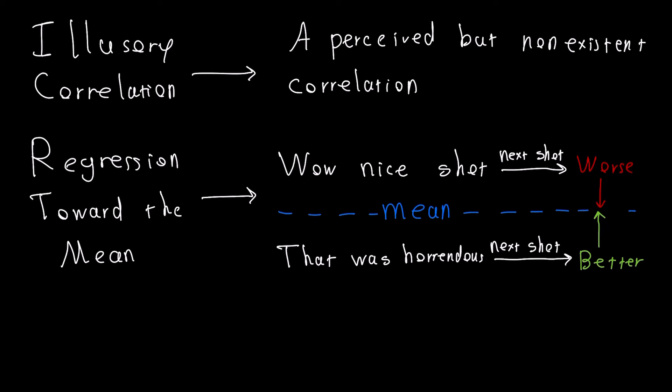People look at the downward movement in quality of shot or the upward movement in quality of shot and try to make a correlation out of it, when it's just more likely that someone's going to have an average shot.